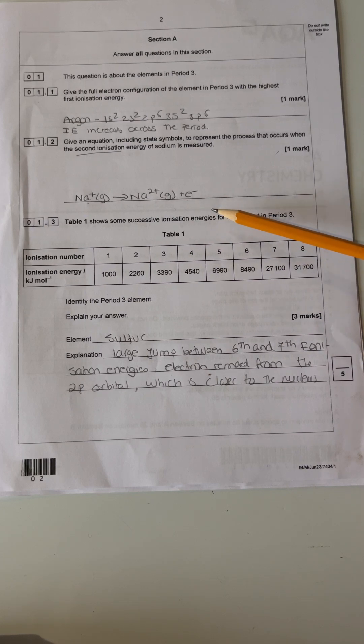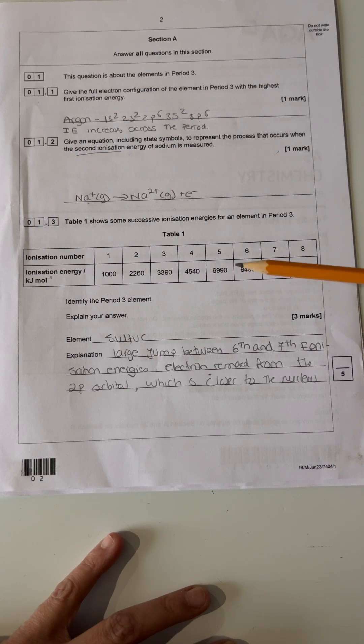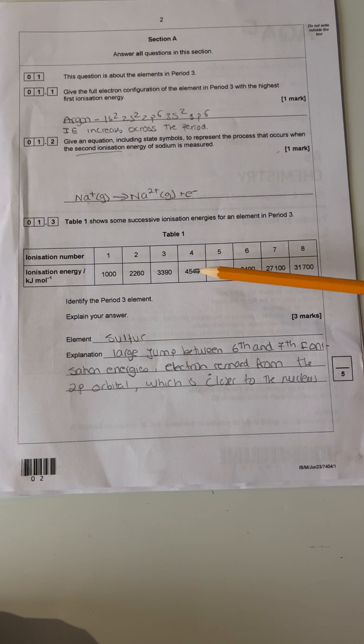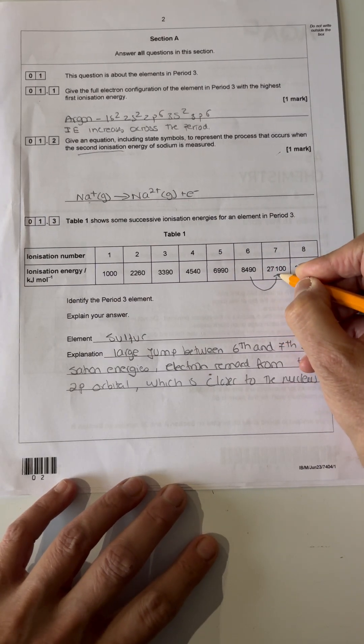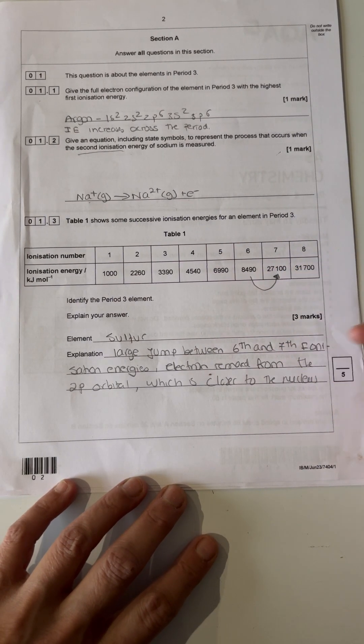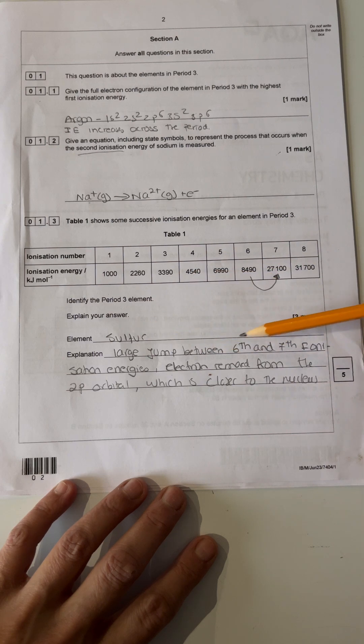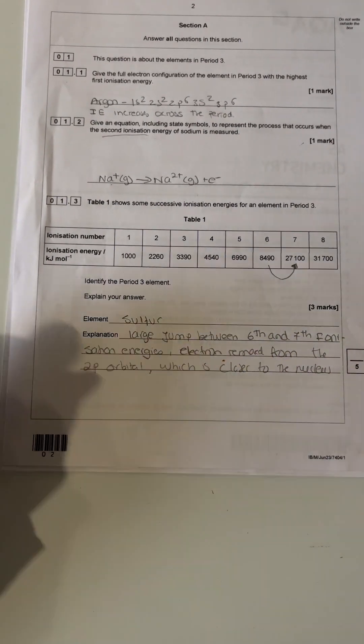The table shows successive ionization energies for an element in period three. You've got all this ionization energy here. What you're looking for is the big jump in ionization energy. You've got one thousand, two thousand, three thousand, four thousand, six thousand, eight thousand, and then twenty-seven thousand. So the big jump is between six and seven. That's where you change shell. If you change shell, there are six electrons in the outer shell, so it has to be sulfur. Large jump between six and seven ionization energy—electron removed from the 2p orbital, which is closer to the nucleus.